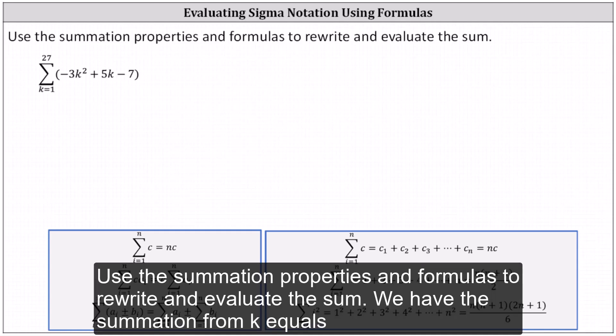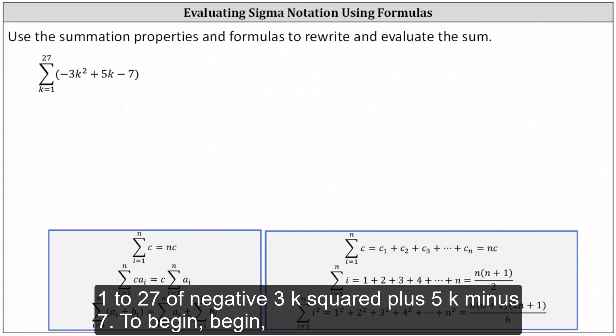Use the summation properties and formulas to rewrite and evaluate the sum. We have the summation from k equals one to 27 of negative three k squared plus five k minus seven.